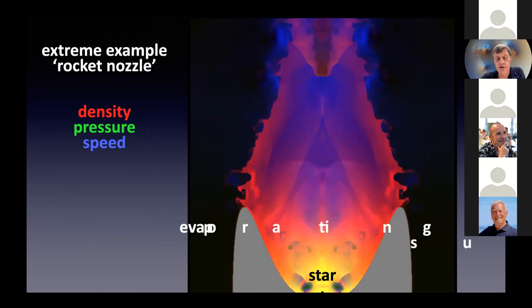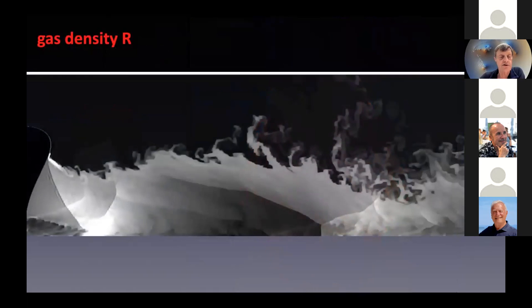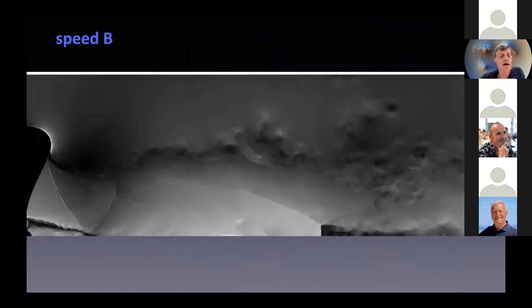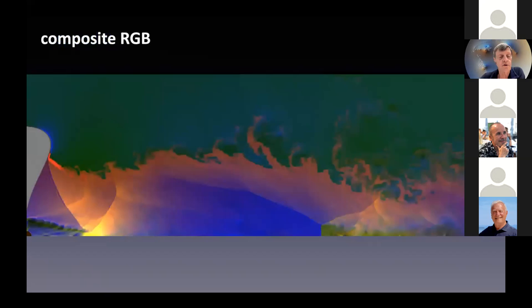Typically, you have a star over here, the evaporating surface over there, and everything is actually symmetric around the central axis. This would typically give you an idea of how to compose an image like this. You have the gas density in the red channel, the pressure in the green channel, and the speed in the blue channel to give a composite of this type of situation.